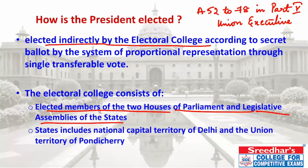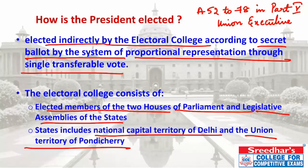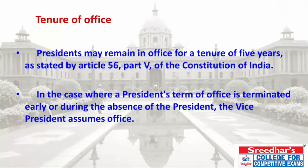Additionally, the National Capital Territory of Delhi and the Union Territory of Pondicherry also participate in the election of the President. The election uses a secret ballot system through Proportional Representation by means of Single Transferable Vote.